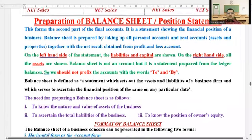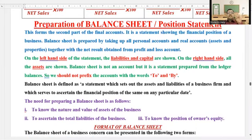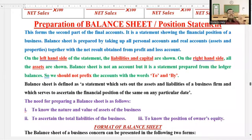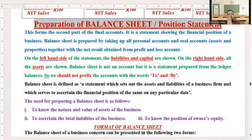Let's continue. Suppose a trial balance has five items: asset, capital, liability, income, and expense. Out of these five, two have already been recorded — direct incomes appear in trading account and indirect ones in profit and loss. The remaining items — asset, capital, and liability — are used to know the financial status of a businessman. This statement is known as the balance sheet.